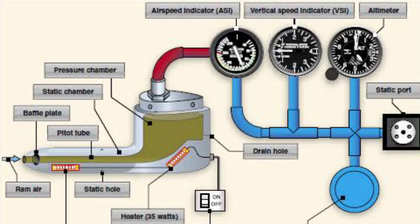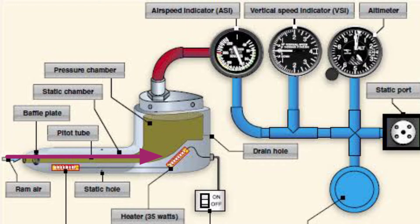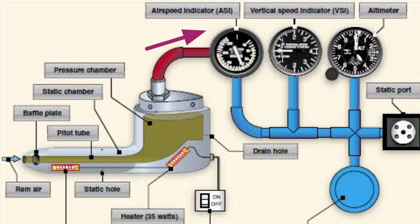Below the baffle, a drain hole is provided allowing moisture to escape. The ram air is directed off to a chamber in a sharp fin assembly and applied to a tube or riser, which pressurizes air out of the Pitot assembly to the airspeed indicator. The outer section of the Pitot tube is equipped with small holes designed to collect static air pressure from the atmosphere.